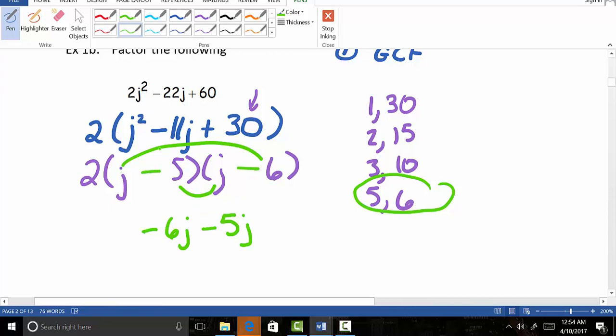And you can always check by distributing. So it looks like j times j gives us our j squared. j times negative 6 gives us negative 6j. Negative 5 times j gives us negative 5j.